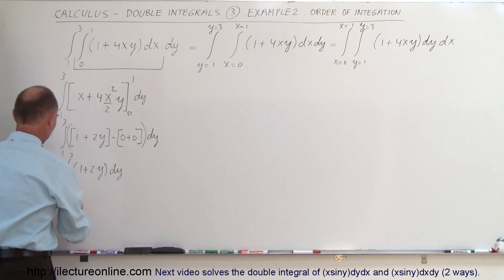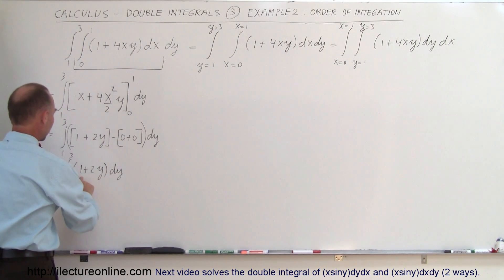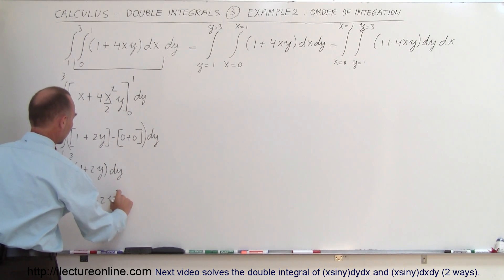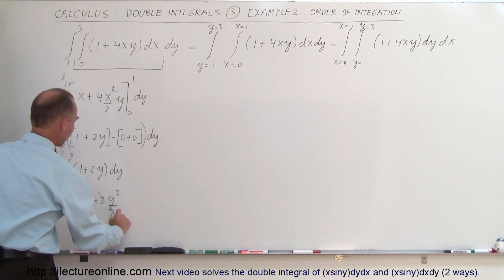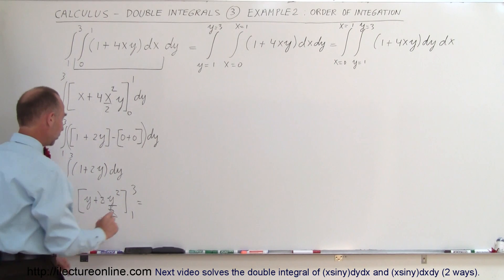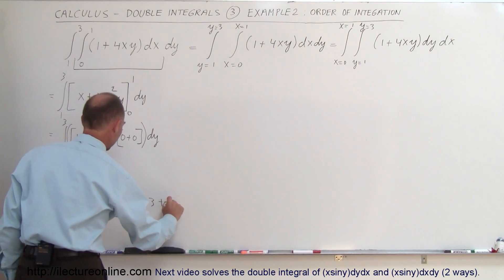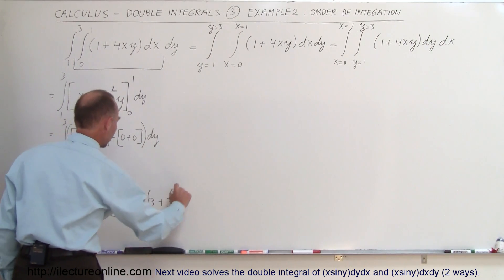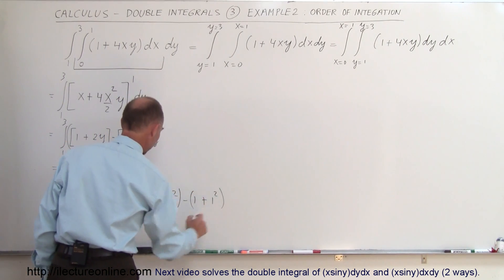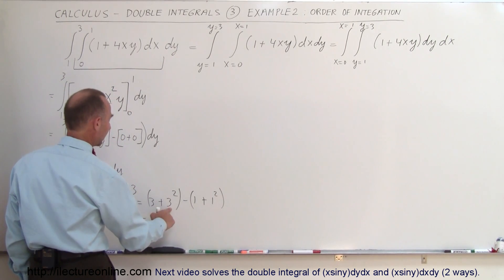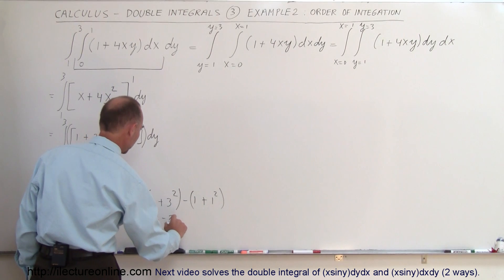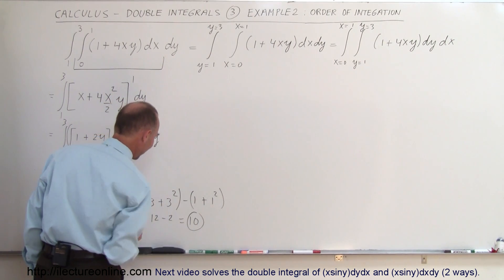Now we integrate again. Integrating 1 dy gives y, and integrating 2y gives y squared — the 2's cancel out — evaluated from 1 to 3. Plugging in the upper limit gives 3 plus 3 squared, and subtracting the lower limit gives 1 plus 1 squared. So this equals 9 plus 3 which is 12, minus 1 plus 1 which is 2, giving a final answer of 10.